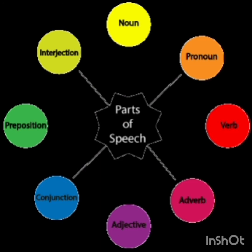A collective noun is the name of a group or collection of persons or things taken as a whole. For example, 'flock of sheep' — there are many sheep, and collectively they are called a flock. Similarly, 'bunch of roses' — there are many roses together.